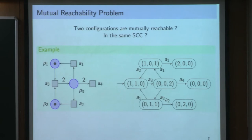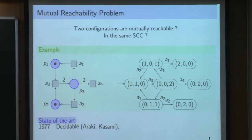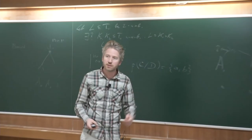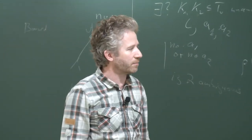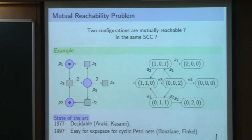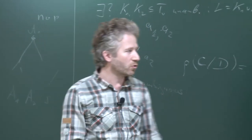Just one important remark to motivate the state of the art. The mutual reachability problem was proved to be decidable in 1977, because if you look at the mutual reachability relation, it's a congruence relation over the natural numbers with addition. In particular, you can prove the reachability problem is decidable in this general context. The mutual reachability problem for cyclic Petri Nets - meaning every action is reversible, which is not the case in general - was studied separately.